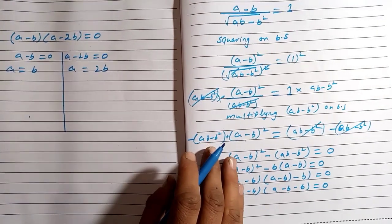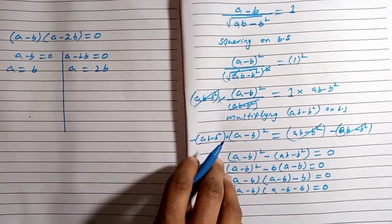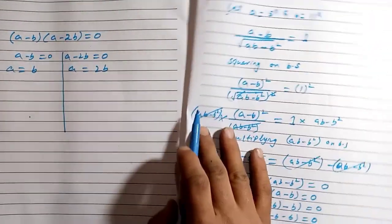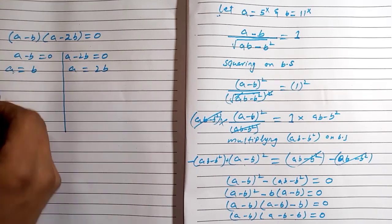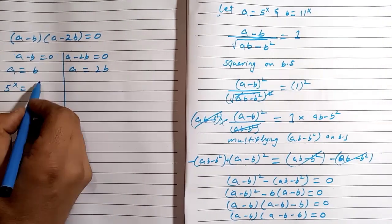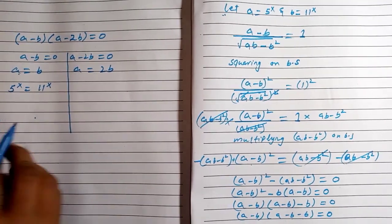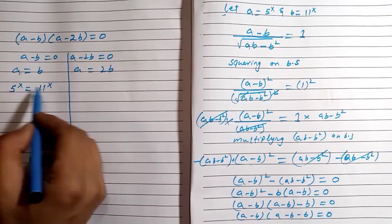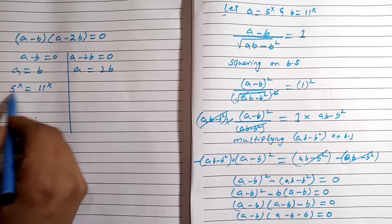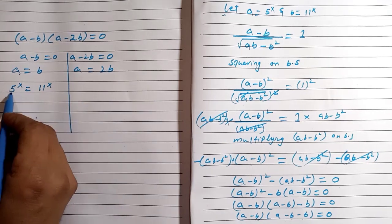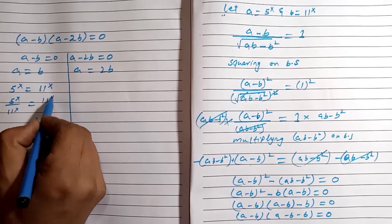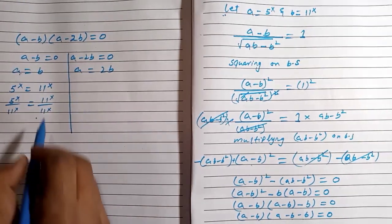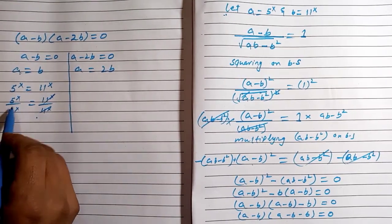We substitute back: a = 5^x and b = 11^x. From a = b we get 5^x = 11^x. Dividing both sides by 11^x gives 5^x divided by 11^x, and using the rule (a/b)^x = a^x/b^x, we get (5/11)^x equal to 1.